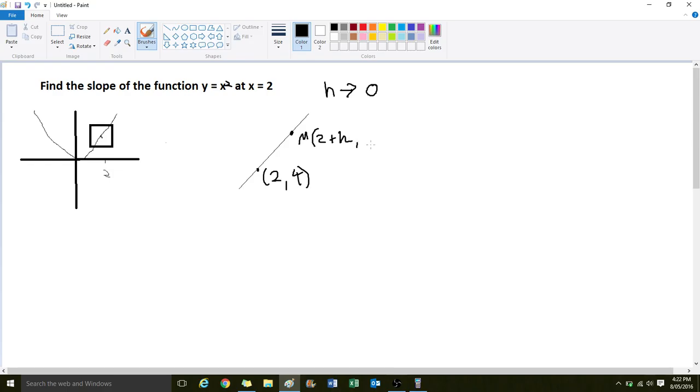And the y coordinate, of course, is going to be y equals x squared. So if this is our x coordinate, 2 plus h, then our y coordinate is going to be 2 plus h squared. And that's our point m.